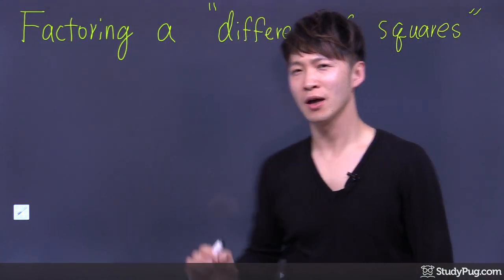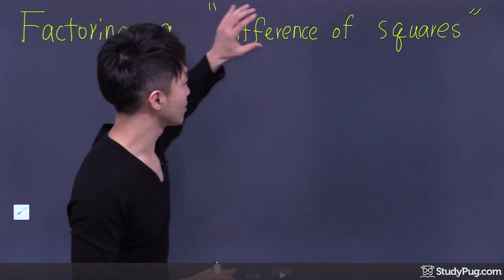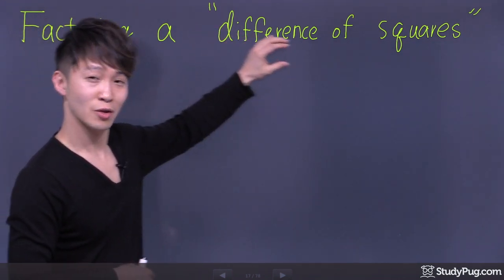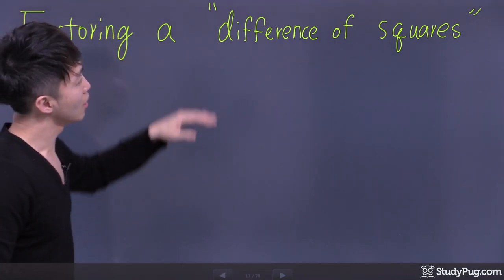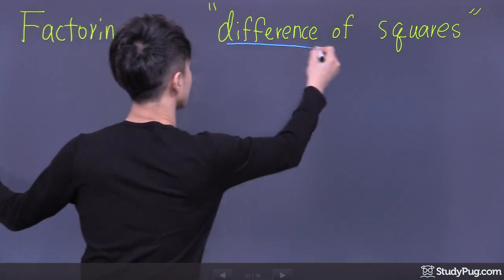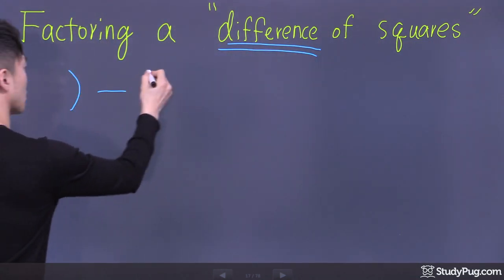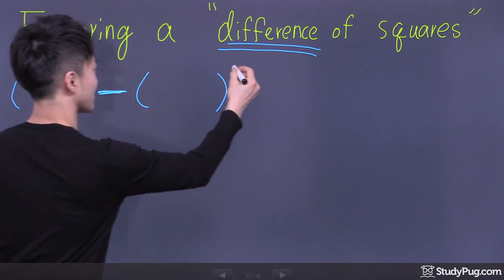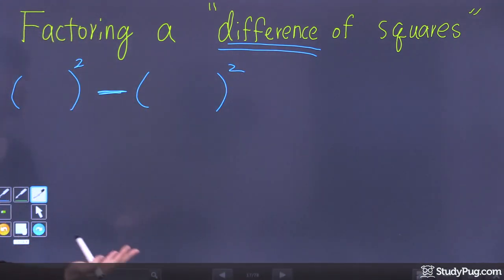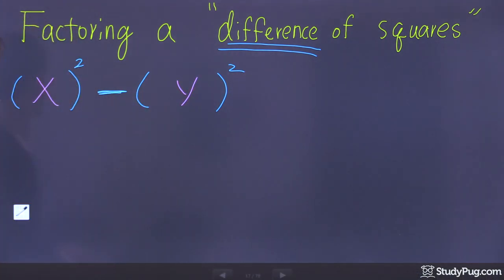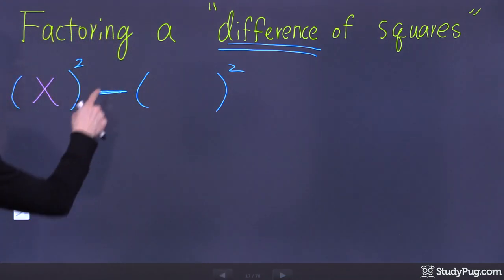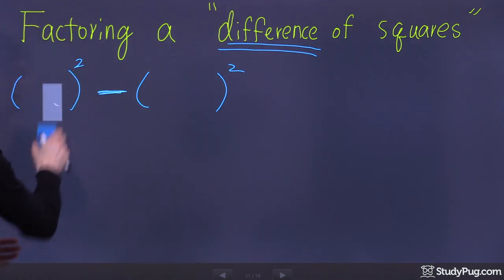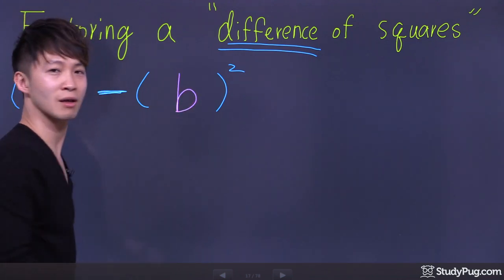Before we learn how to factor a difference of squares, let's talk about the meaning of these three words: difference of squares. The three words actually already tell us the exact meaning. A difference of squares is the difference of squares. For example, the difference of x squared and y squared, or the difference of x squared and 5 squared, or the difference of a squared and b squared.